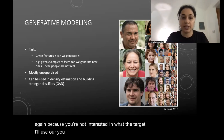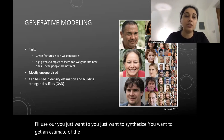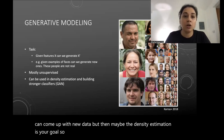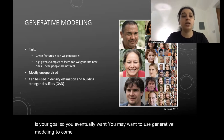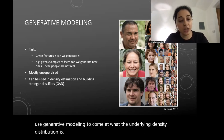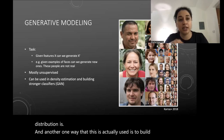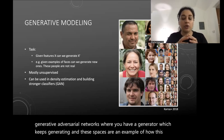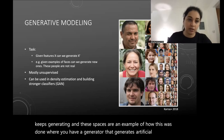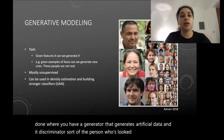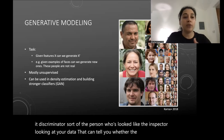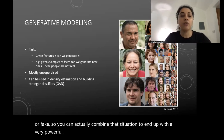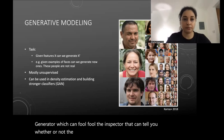The density estimation itself may be your goal — you want to use generative modeling to characterize the underlying density distribution. One powerful approach is Generative Adversarial Networks (GANs), where a generator continuously generates artificial data and a discriminator — like an inspector — determines whether the generated data is real or fake. You combine these to end up with a very powerful generator that can fool the discriminator into thinking generated data is real.